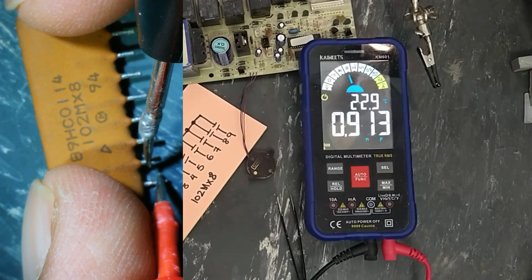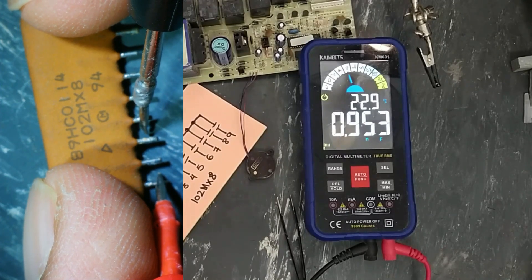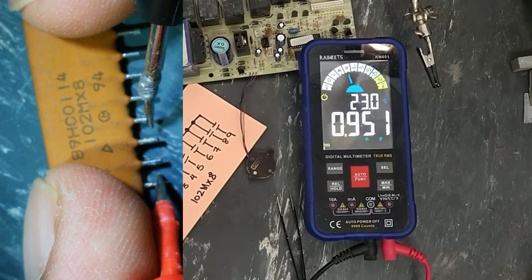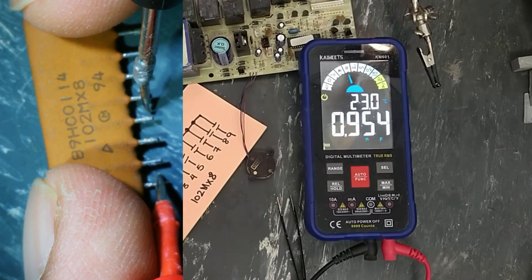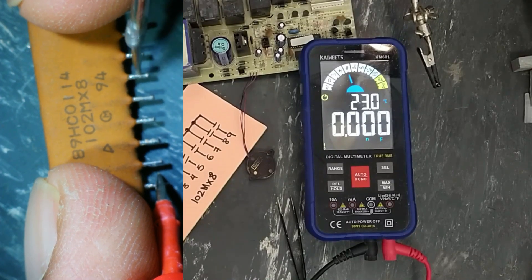0.9 nano, 0.9 nano, 0.9 nano, 0.95 nano, 0.95, 0.95, 0.97.